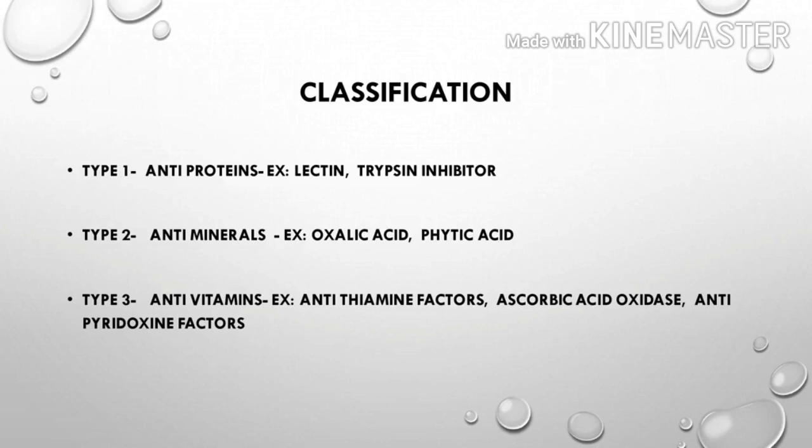The second category is anti-minerals, which act as ascorbic acid oxidizers. For example, oxalic acid and phytic acid. They prevent mineral absorption — specifically iron and calcium absorption.